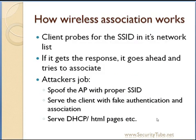As explained earlier, the client probes for the SSID present in its network list, and if it gets a probe response, it goes ahead and tries to associate with that access point. The attacker's job is to spoof the SSID of the proper access point. When a client probes for that SSID, the attacker must serve the client with a proper probe response, authentication response, association response, and thereafter DHCP and proper HTML pages, so that the station always feels it is getting served properly and has no knowledge of the attacker's existence.